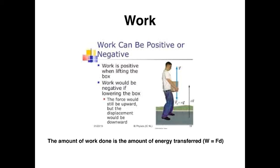The amount of work done is the amount of energy transferred. Work equals force times D, which can be displacement or distance. Because force is a vector quantity and displacement is a vector quantity, work is also a vector quantity. The units of work are joules. One joule is the work necessary to move one Newton of force one meter in distance, so one joule equals a Newton times a meter.